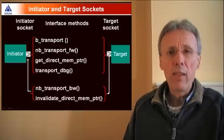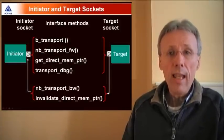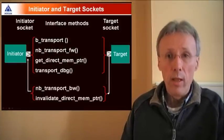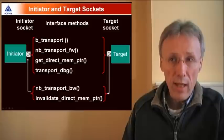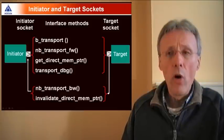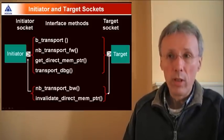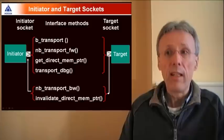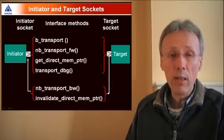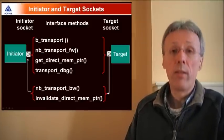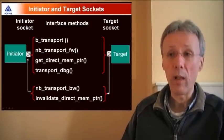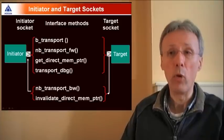At the heart of TLM2 are six interface method calls that form the TLM2 core interfaces. On the forward path, there are calls to BTransport, NBTransport, GetDirectMemoryPointer and TransportDebug. And on the backward path, calls to NBTransport backward and invalidate DirectMemoryPointer.